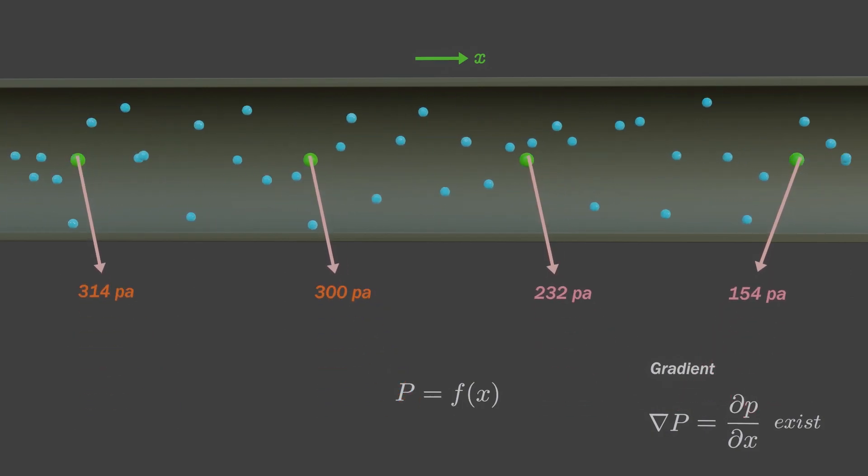Note, if pressure at those green points does not change with time, then change in pressure with time does not exist. But if pressure changes with time, like this, then not only position, pressure is function of time also. So, both pressure gradient and pressure rate exist.